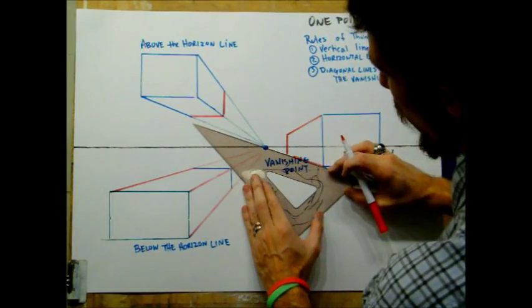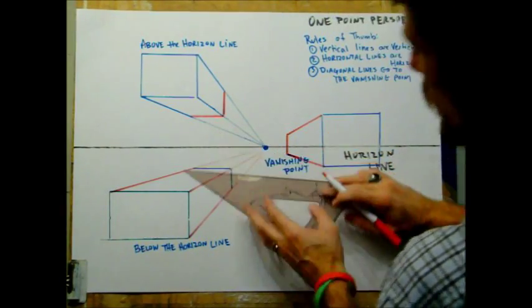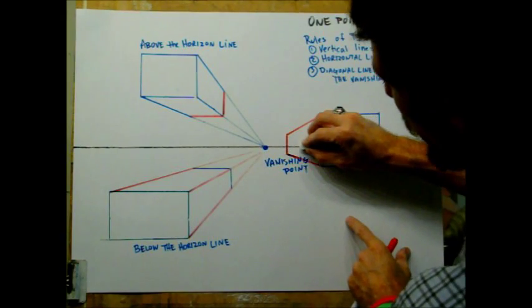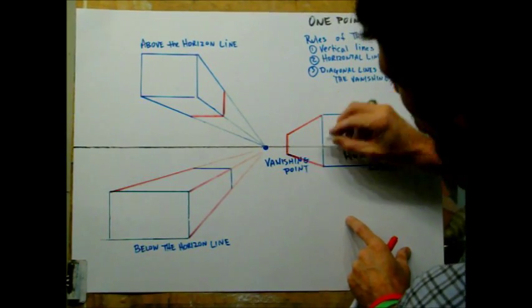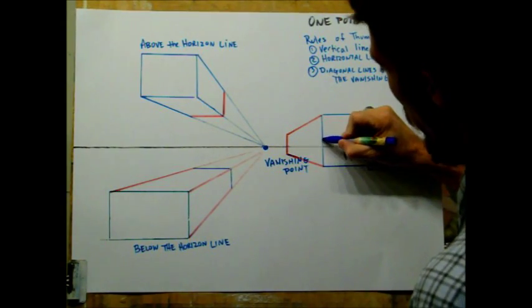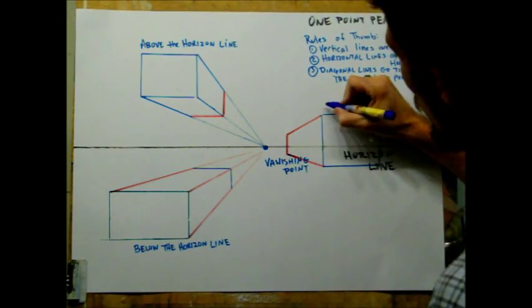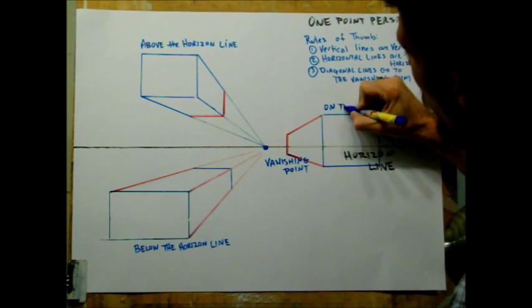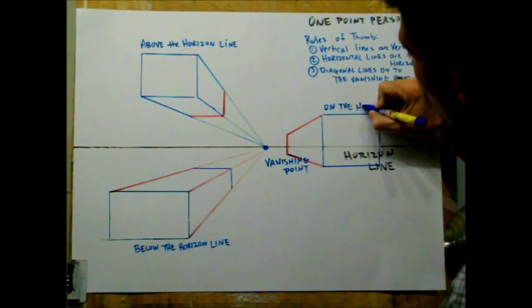I'll just finish touching that up. So now I have a cube on my horizon line that does not go back forever.